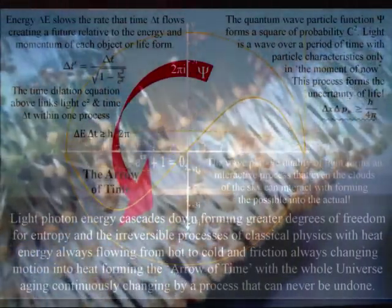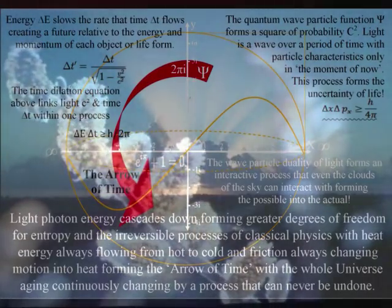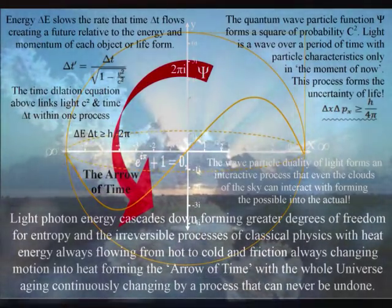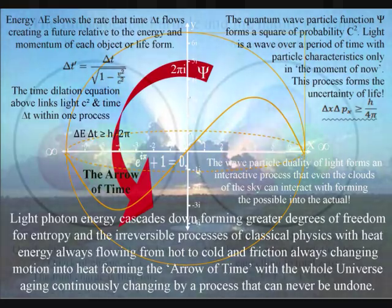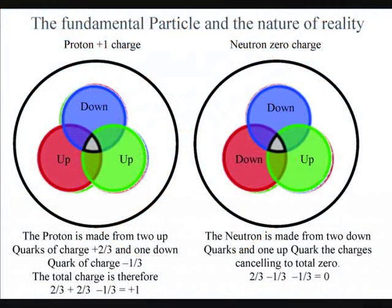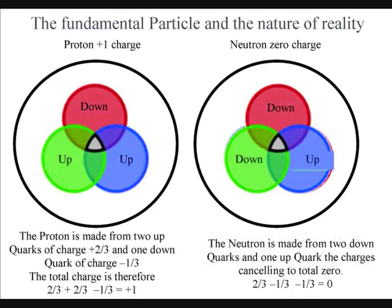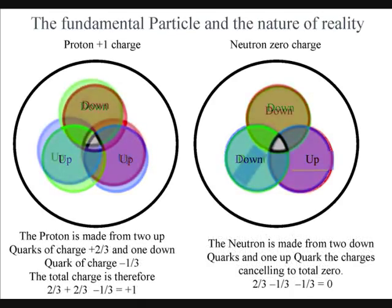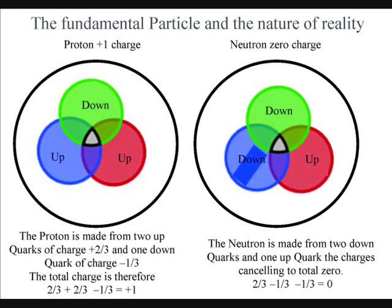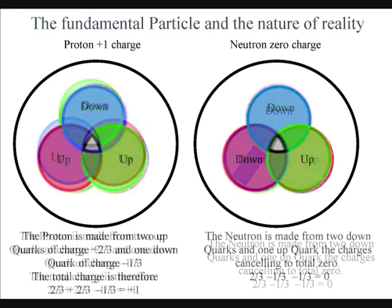We have photon energy cascading down from the sun, forming greater degrees of freedom for entropy or disorganization, forming the passage or continuum of time. There is no concept of time at all in the subatomic world within the atoms. All we have is the distribution of charge into three parts representing three-dimensional space.